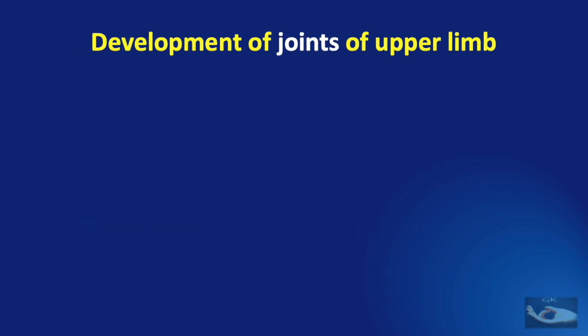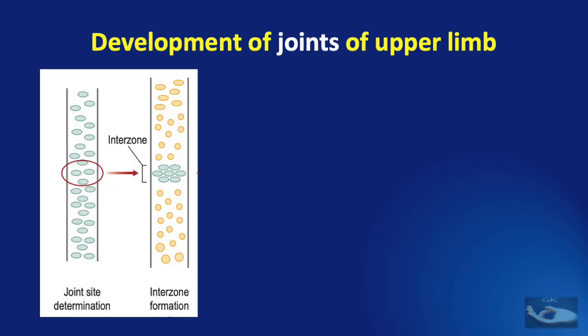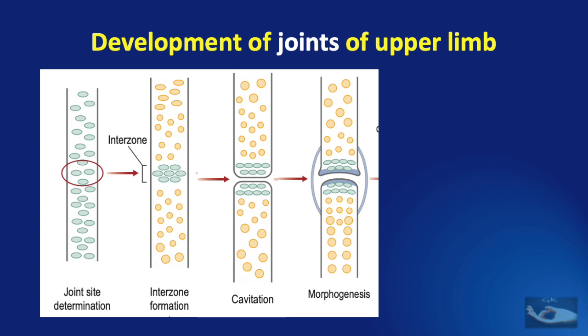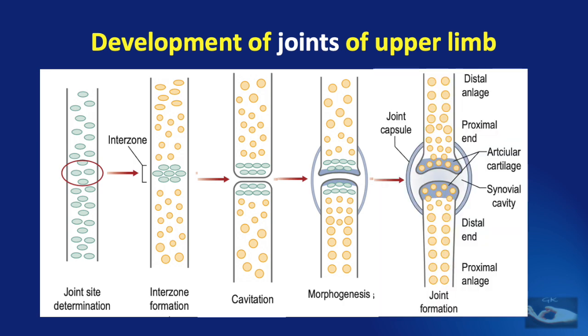The development of joints of the upper limb is also interesting. The first morphologic evidence of joint formation is the compact cellular condensation called the interzone. The central region of the interzone begins to expand, accumulates hyaluronan, and becomes hypocellular in a process termed cavitation. The two cellular regions of the interzone begin to differentiate into the opposing articular cartilage surfaces, and the mesoderm surrounding the developing joint condenses to form the joint capsule. The blue dots are the chondrogenic precursors and the orange dots are the chondrocytes.